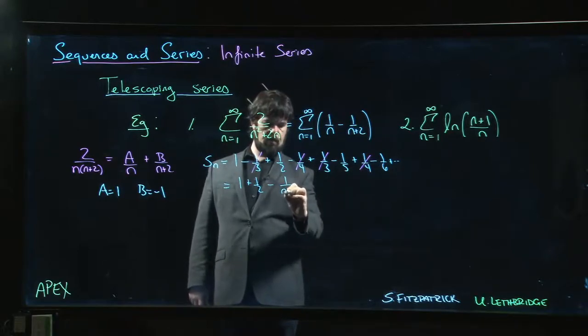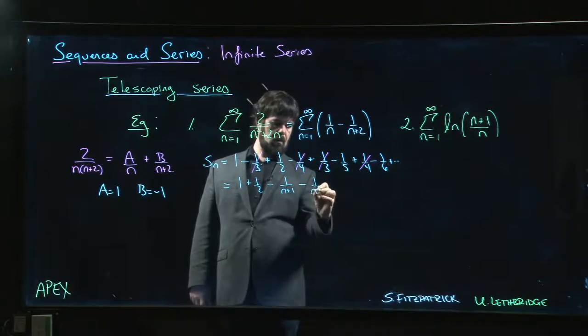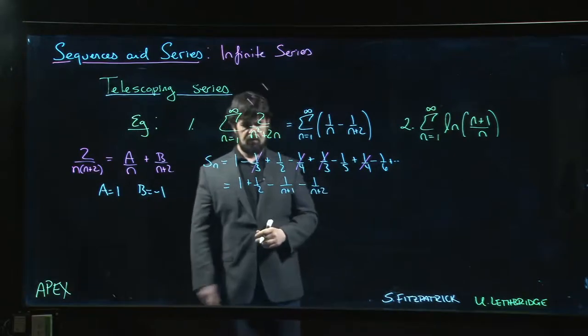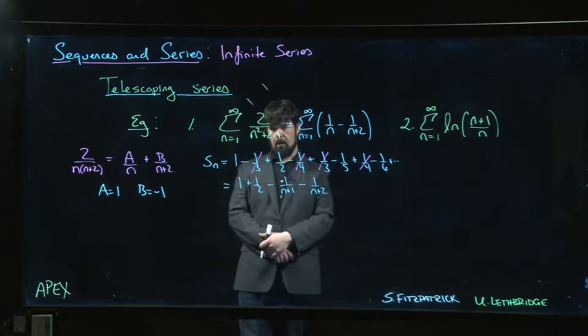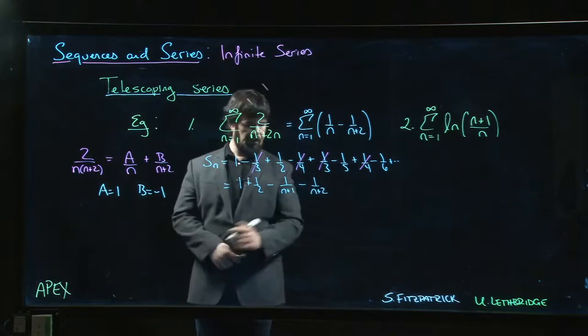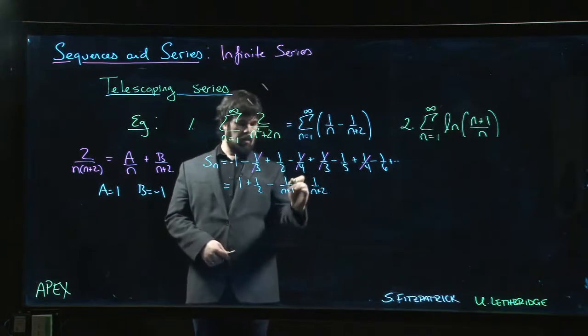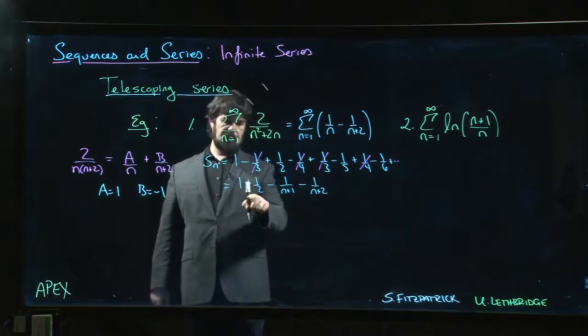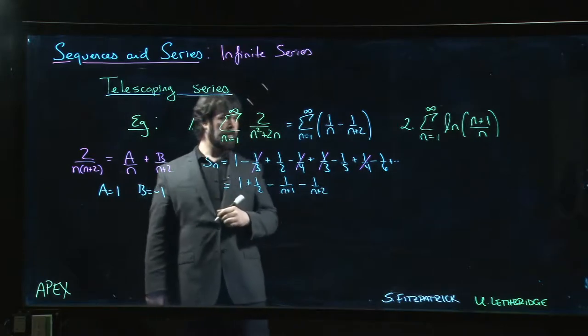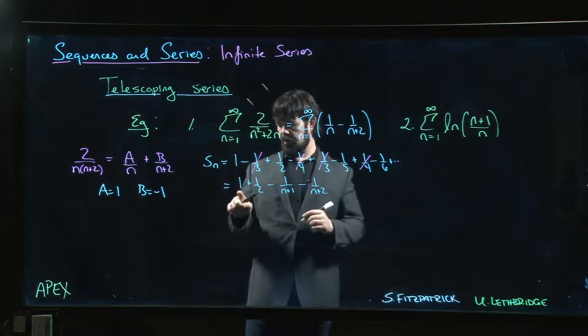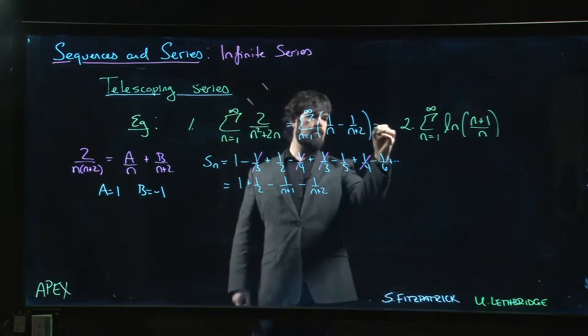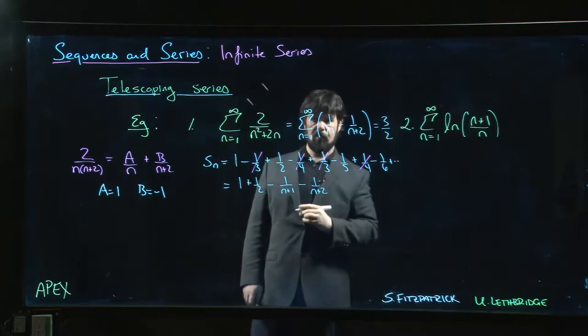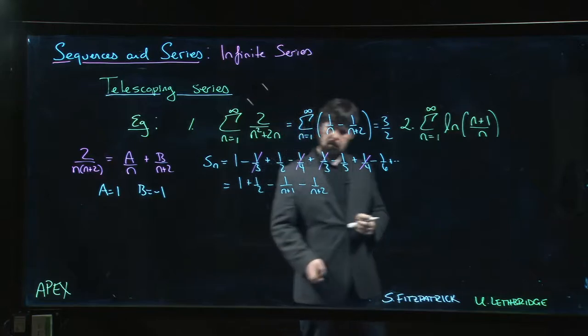So, we have 1 over n plus 1 and minus 1 over n plus 2. So, it simplifies down to there. And if n goes to infinity, well, these are going to go to 0, and those stick around. So, if we take the limit as n goes to infinity, we're just left with 1 plus 1 half. So, we get 3 over 2 for the limit.